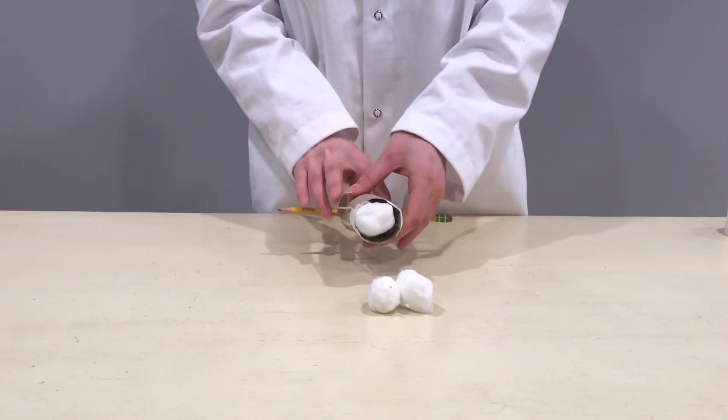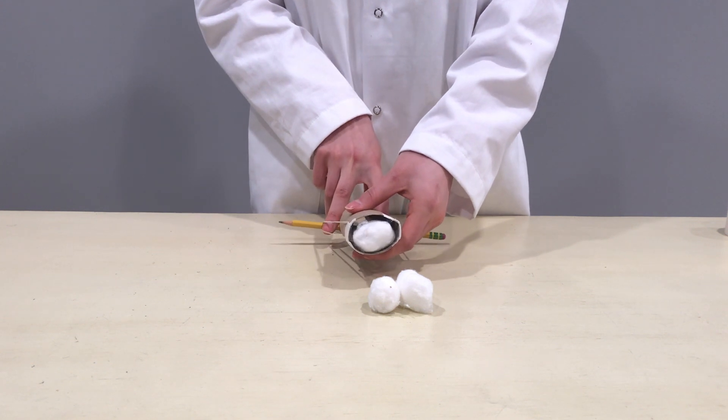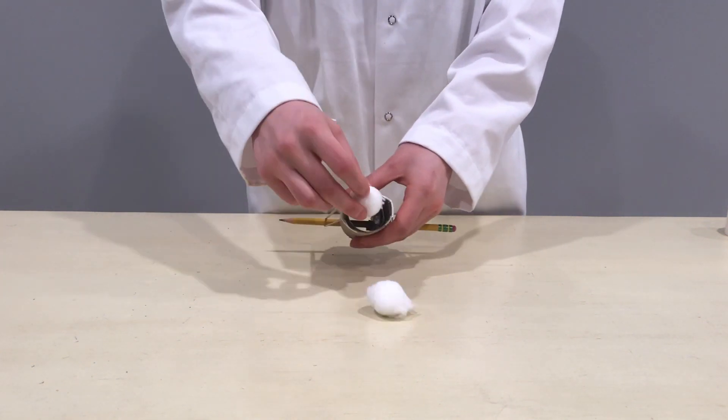Hold the launcher slightly horizontal so the cotton ball doesn't fall out. Pull back on the pencil and release your cotton ball and watch it fly. Bye.